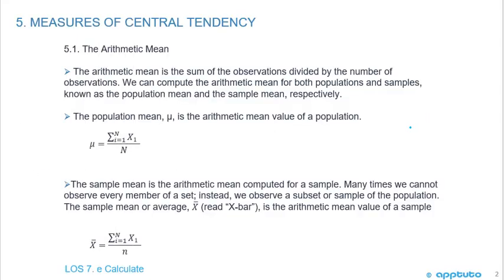First we're going to start with the arithmetic mean. The arithmetic mean is the sum of the observations divided by the number of observations. We can compute the arithmetic mean for both populations and samples, known as the population mean and the sample mean respectively. So you can see the formula is the same.